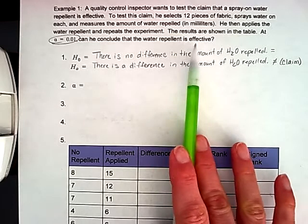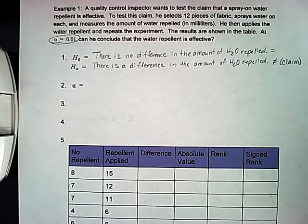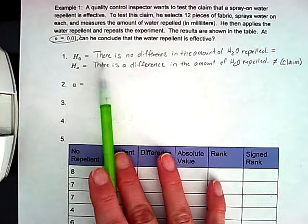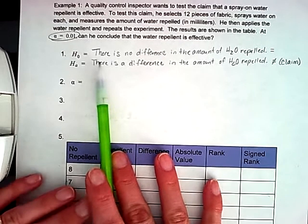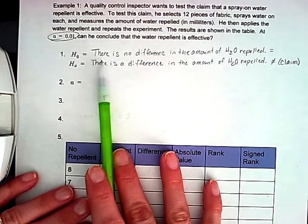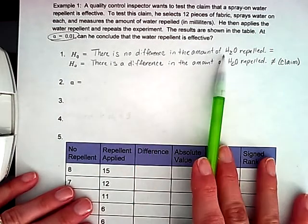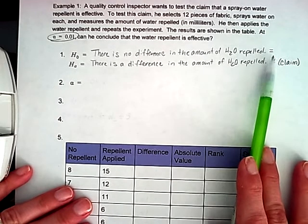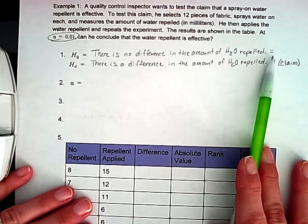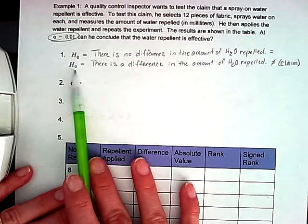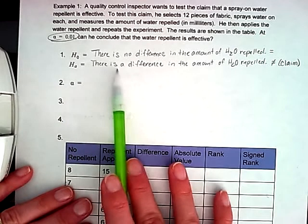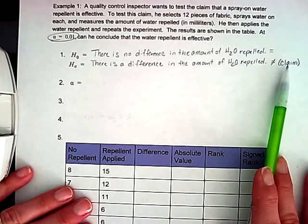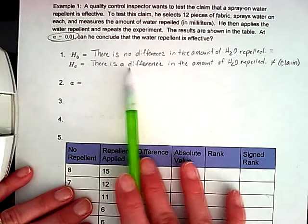So for it to be effective, that must mean there is a difference. So in my null and my alternative hypothesis, you can see I already have these written out. My null hypothesis is going to state that there is no difference in the amount of water repelled. Mathematically what that would mean is that they would be equal to each other. The alternative hypothesis is going to state that there is a difference. Now that's what we're testing here. So you can see that's where I put my claim.